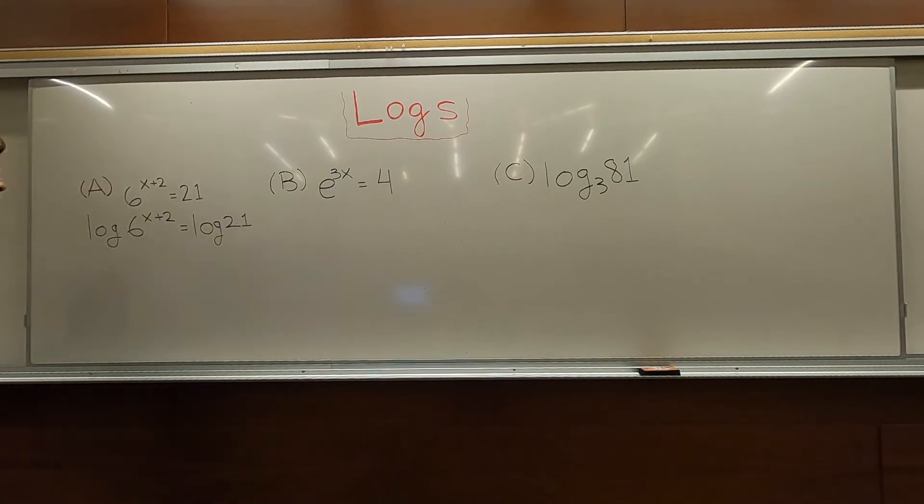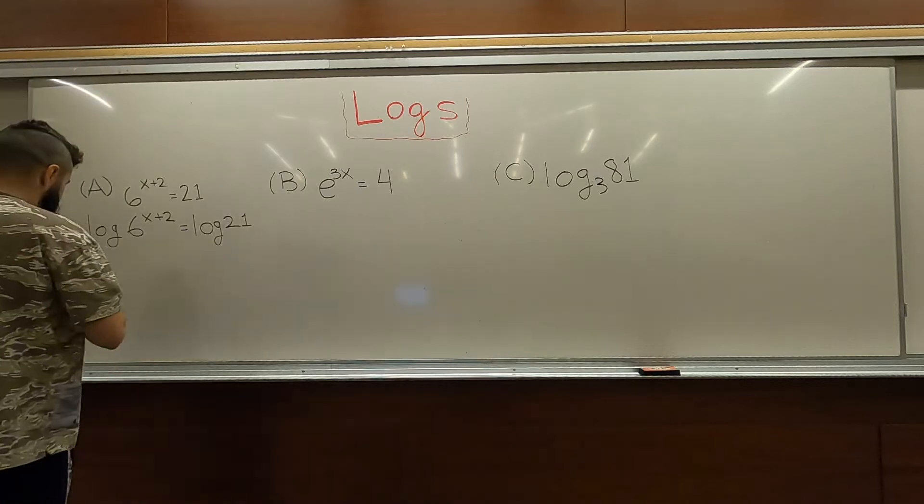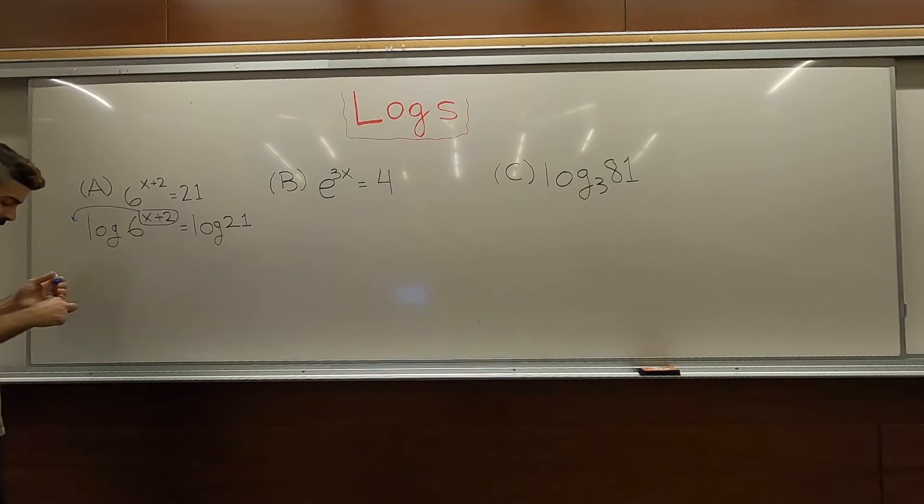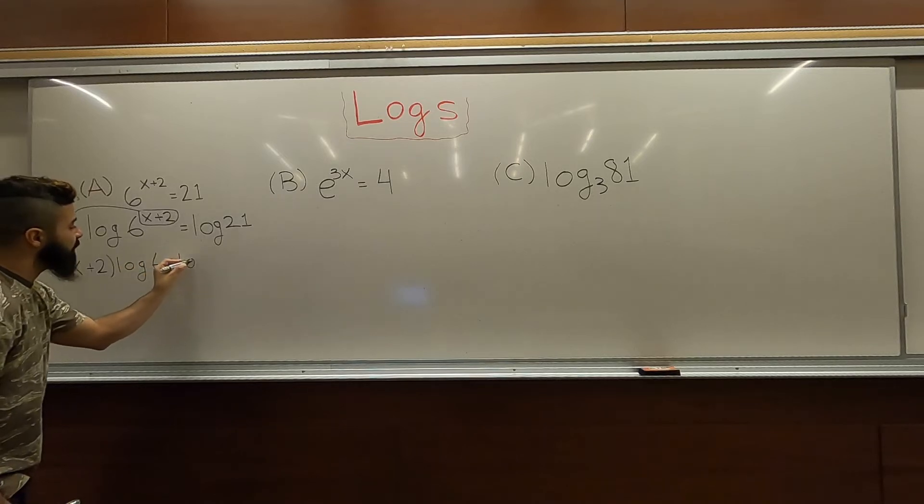One of the properties of logarithms is that the exponent actually comes out in front. So, we got this exponent of x plus 2, and it can drop down front. And then we have x plus 2 log 6 equals log 21.